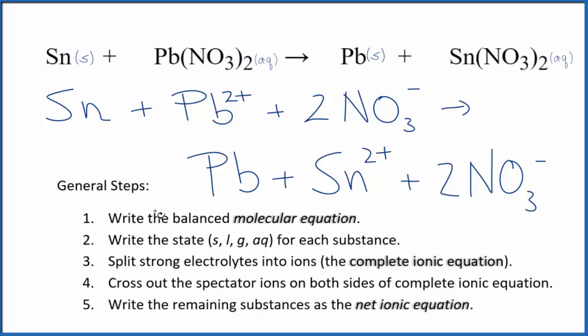Now we get to cross out those spectator ions - they're on both sides. All I see that is the same in the reactants here on top and the products on the bottom is these two nitrate ions. So these are spectator ions, we can cross those out.